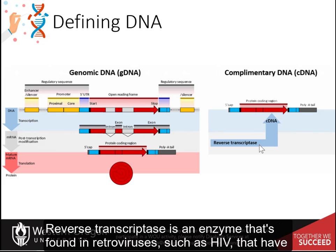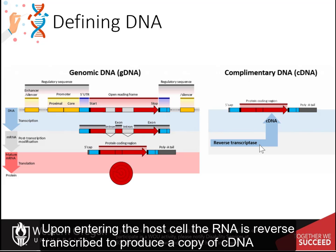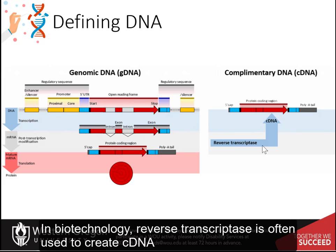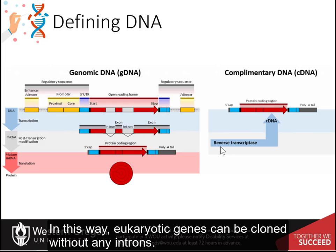Reverse transcriptase is an enzyme that is found in retroviruses, such as HIV, that have RNA as their core genetic material. Upon entering the host cell, the RNA is reverse transcribed to produce a copy of cDNA that can then integrate into the host genomic DNA. In biotechnology, reverse transcriptase is often used to create cDNA from the messenger RNA expressed in a specific cell or tissue. In this way, eukaryotic genes can be cloned without any introns.